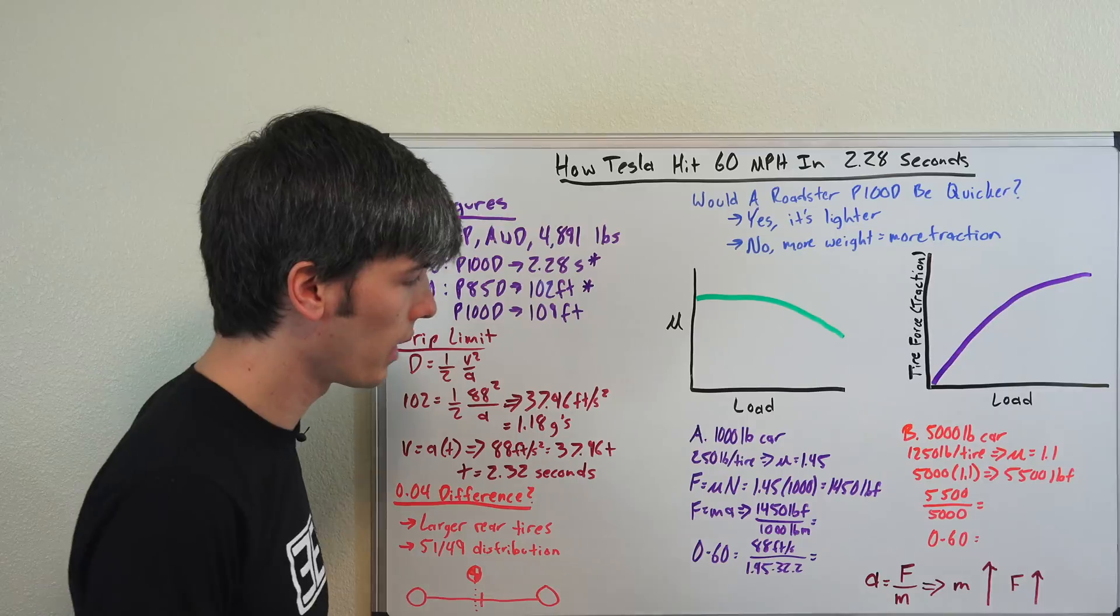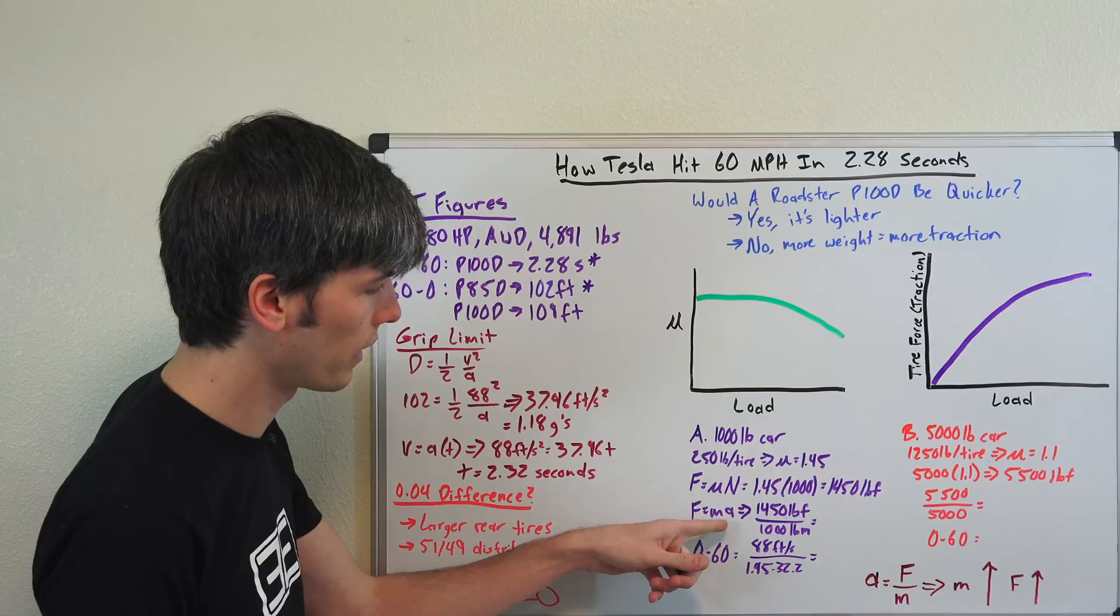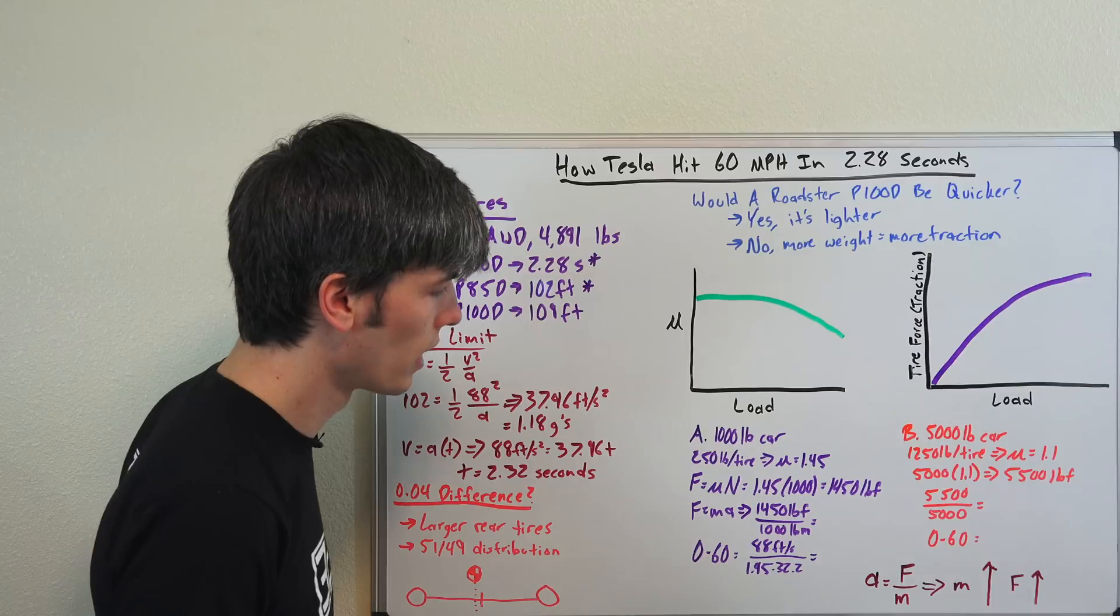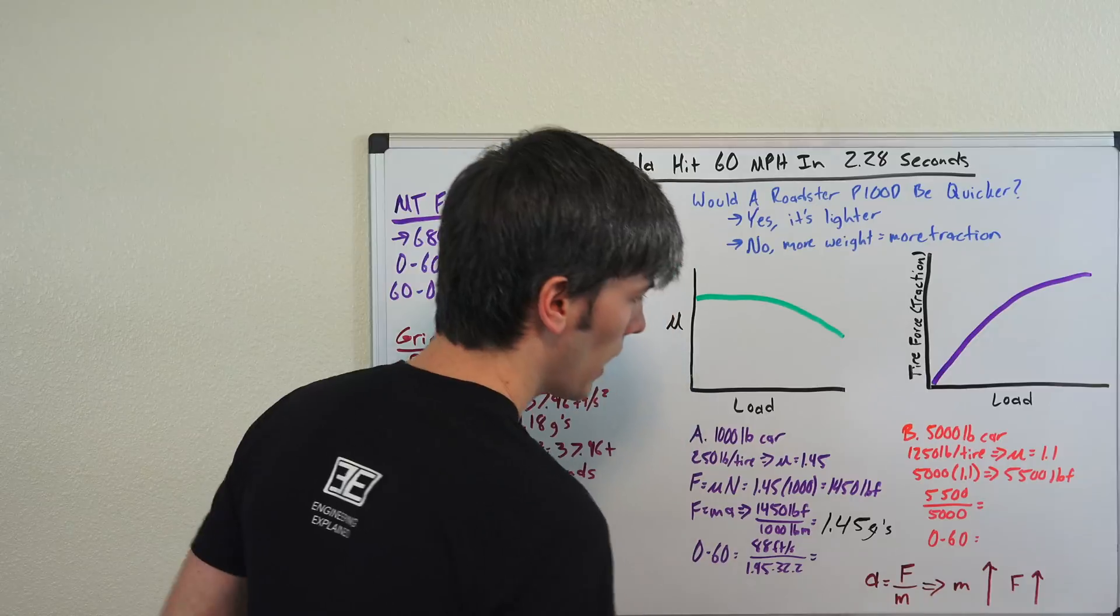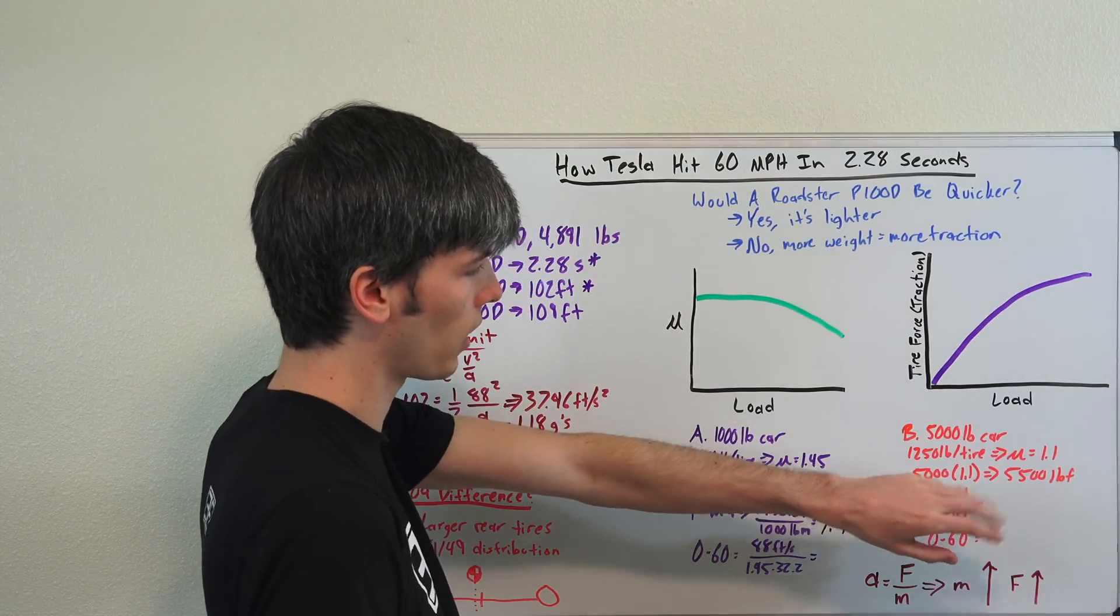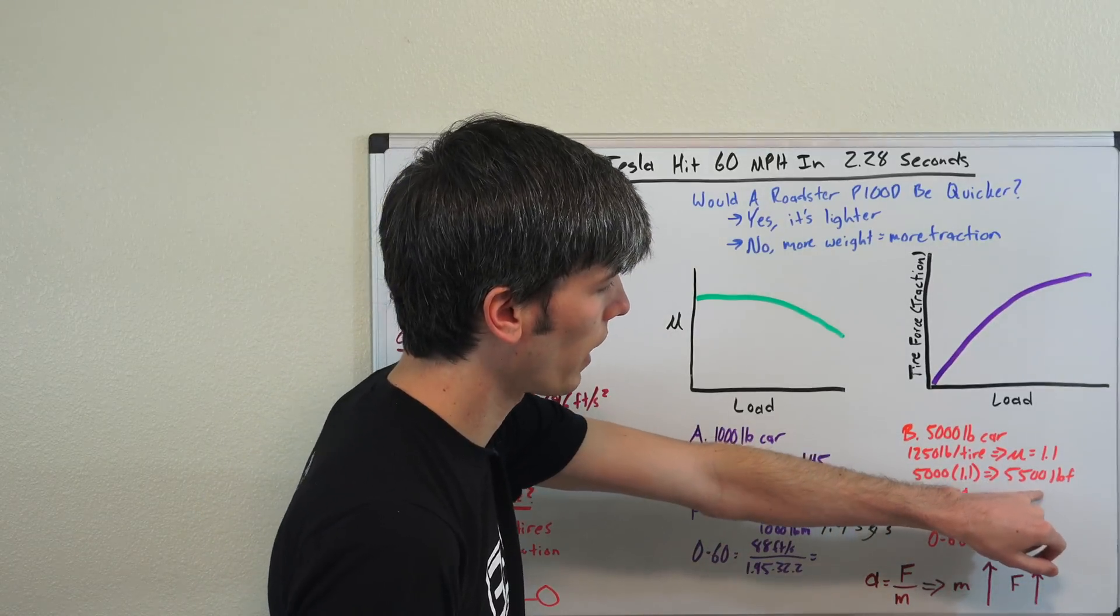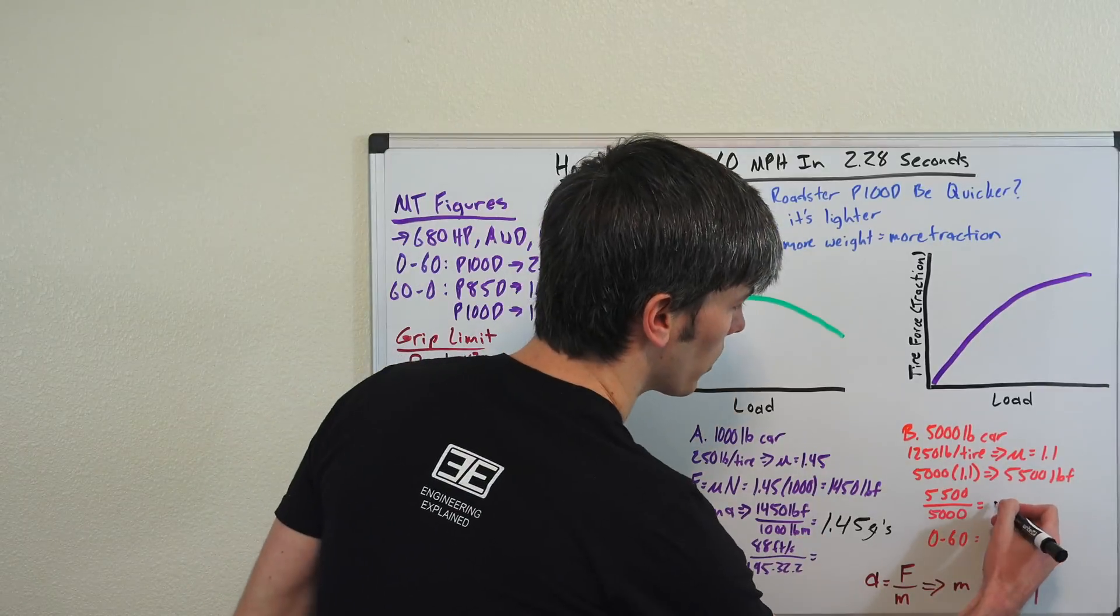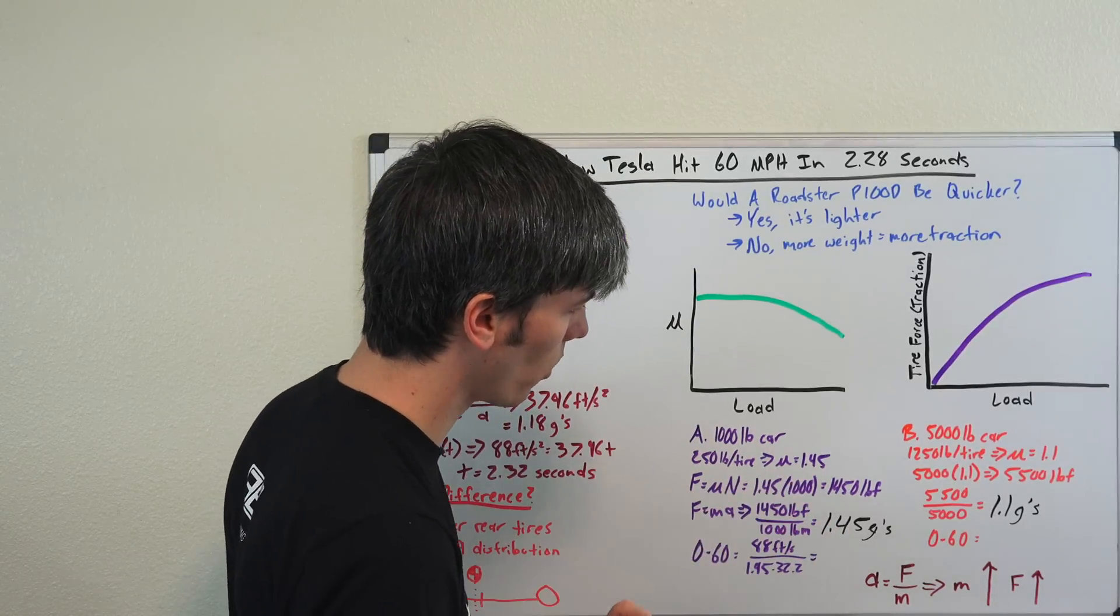So F equals MA. 1450 divided by 1,000 pounds mass. We're just calculating the acceleration here. So A equals F divided by M. There's our force, there's our mass, that gives us 1.45 G's. If we do the same for our 5,000 pound car, assuming it has plenty of horsepower and can take care of that end of it, we're going to do 5,000 times 1.1. That's going to give us 5,500 pounds force. 5,500 pounds force divided by 5,000 pounds mass is going to give us 1.1 G's. You'll notice this correlates perfectly with the coefficient of friction.